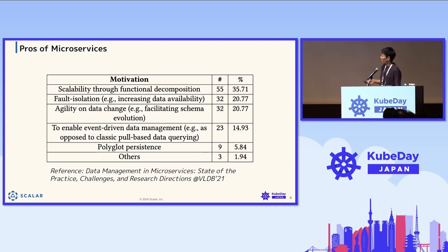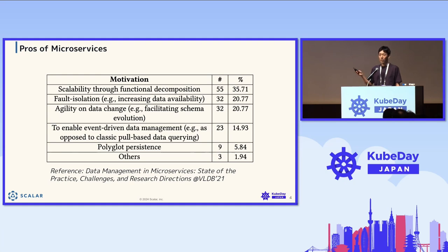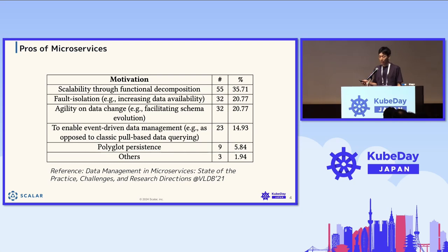The fifth benefit is polyglot persistence — a microservice application can use multiple, potentially different kinds of databases. These are the benefits and motivations of microservices.